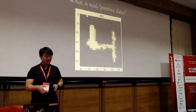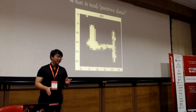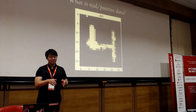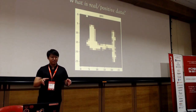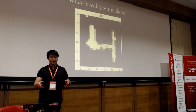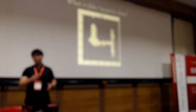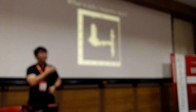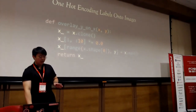Take the MNIST dataset — handwritten digits from zero to nine. Real data is a normal image from the dataset with a one-hot encoding label of the image pasted onto the top-left — the first 10 pixels. We merge labels and features together. Fake data is the same, except the one-hot encoding label is wrong — that's the only difference.